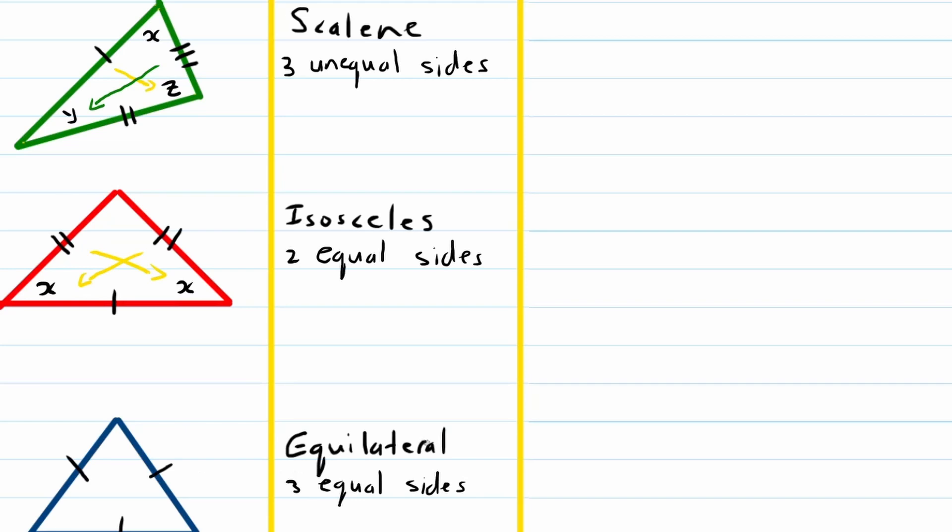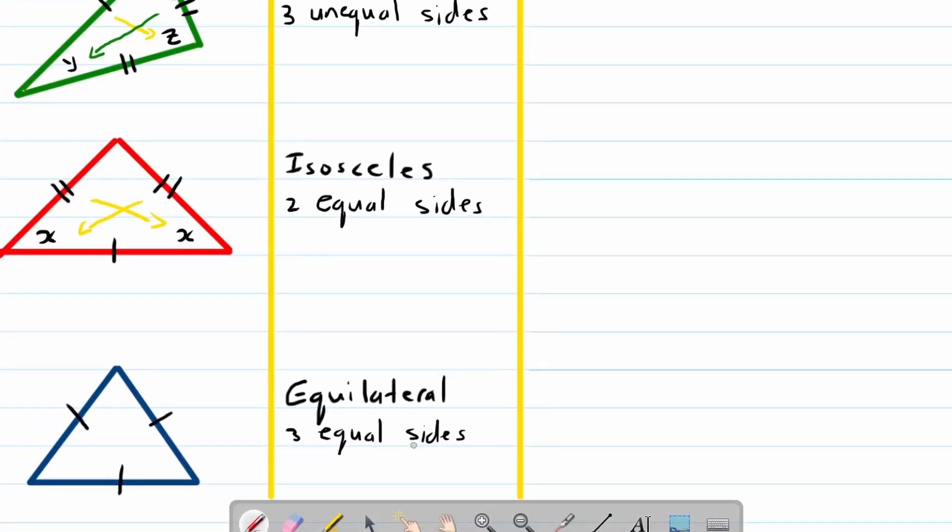And then thirdly, equilateral triangles. Three equal sides will also have three equal angles. Why? Because they are opposite three equal sides, as you can clearly see.